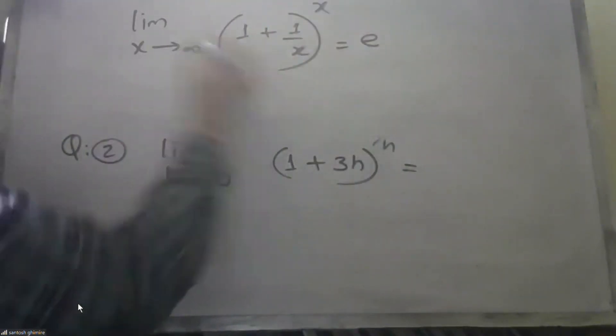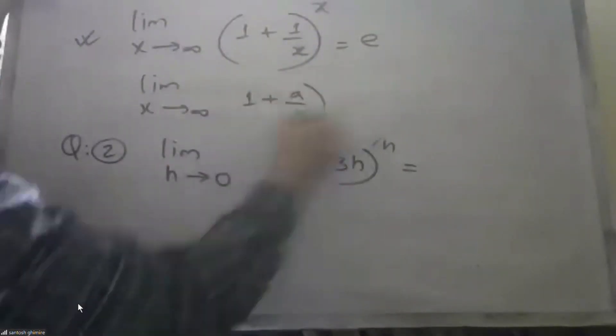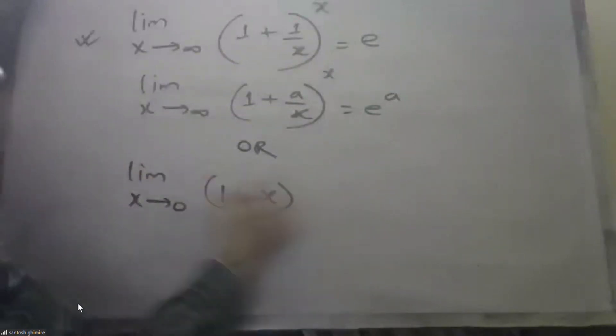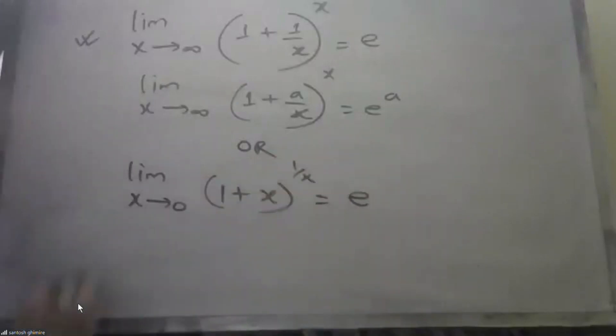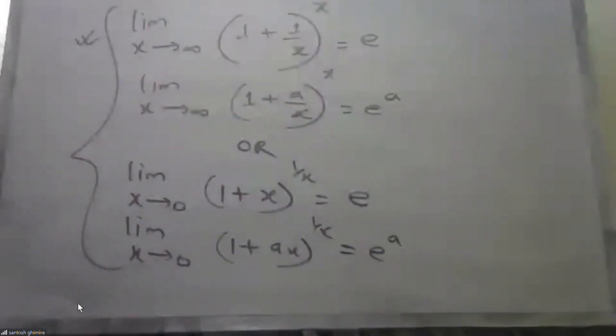Here are the two key forms. We will answer: limit of (1 + a/x)^x as x approaches infinity equals e^a. Also, limit as x approaches 0 of (1 + ax)^(1/x) equals e^a. This definition is 100%. If you have this definition, you can answer any such question easily.